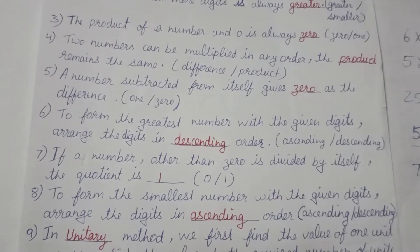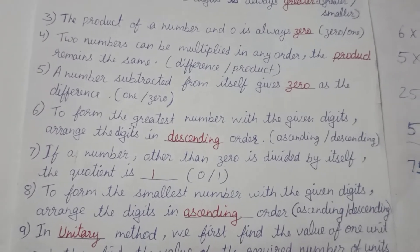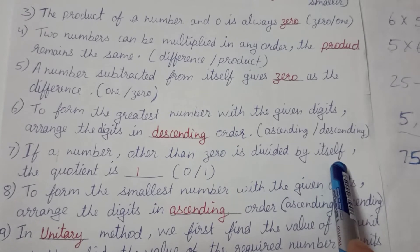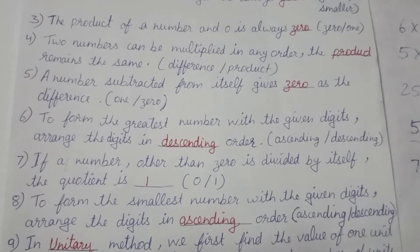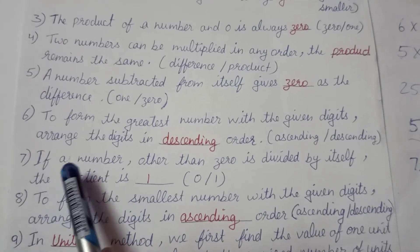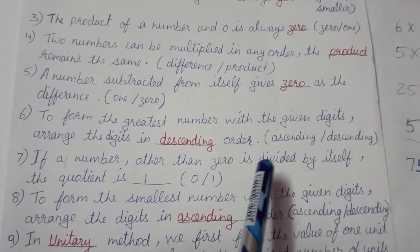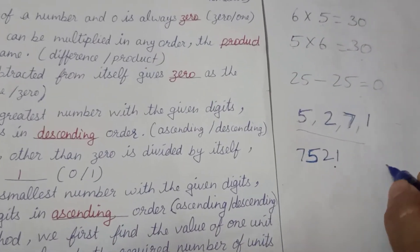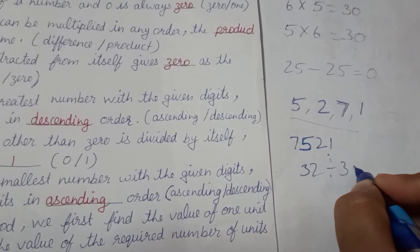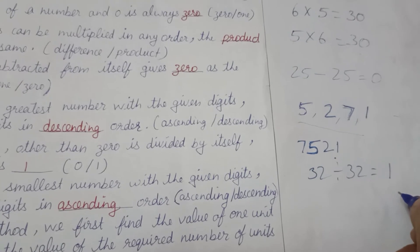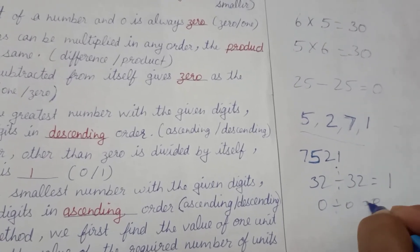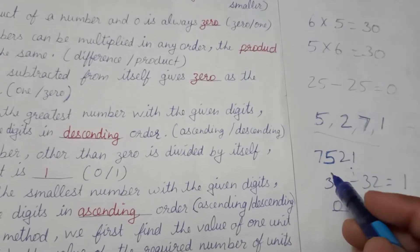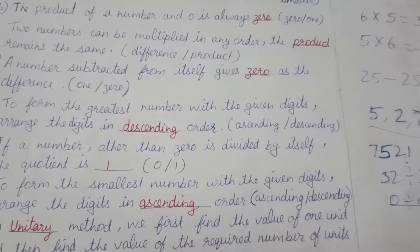If any number other than zero is divided by itself, the quotient is one. For example, 32 divided by 32 equals 1. Note that this does not apply to zero, because zero divided by zero is not defined in the same way. So any non-zero number divided by itself gives quotient one.